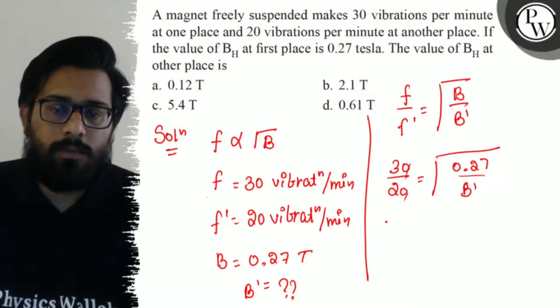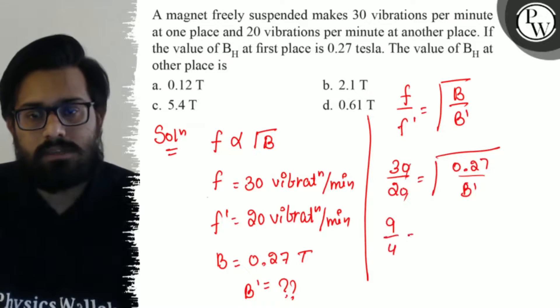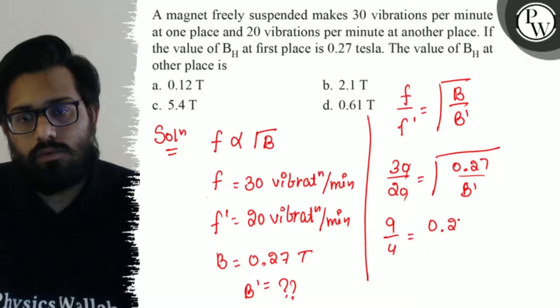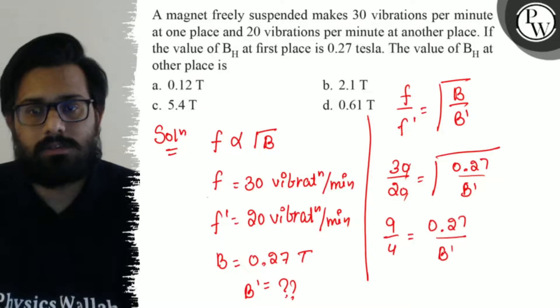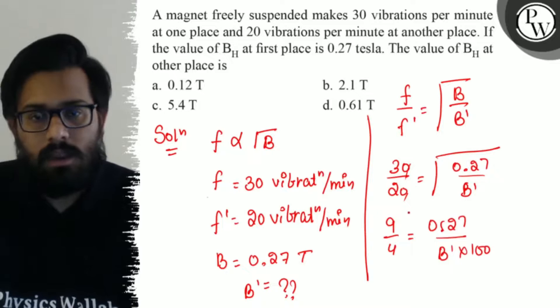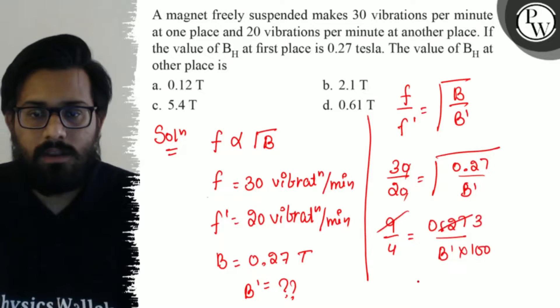Squaring both sides, so 9 by 4 is equal to 0.27 divided by B'. So B' is equal to 0.12 tesla.